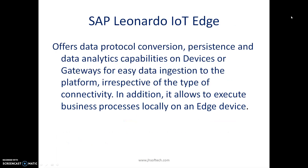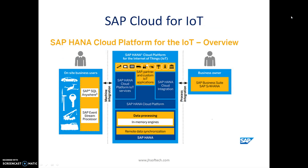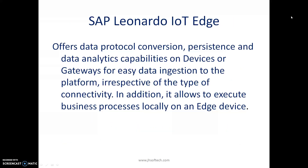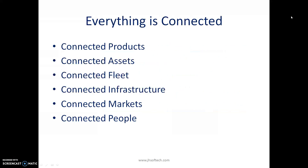SAP Cloud Platform is the platform on which we can connect everything. On-site business users are integrated with the business owner, and mission integration can be performed. SAP partner and customer IoT applications are integrated in the SAP HANA Cloud Platform, along with data processing in-memory engines and remote data synchronization. Through this platform, SAP Leonardo IoT connects everything in an enterprise: connected products, connected assets, connected fleet, connected infrastructure, connected markets, and connected people.